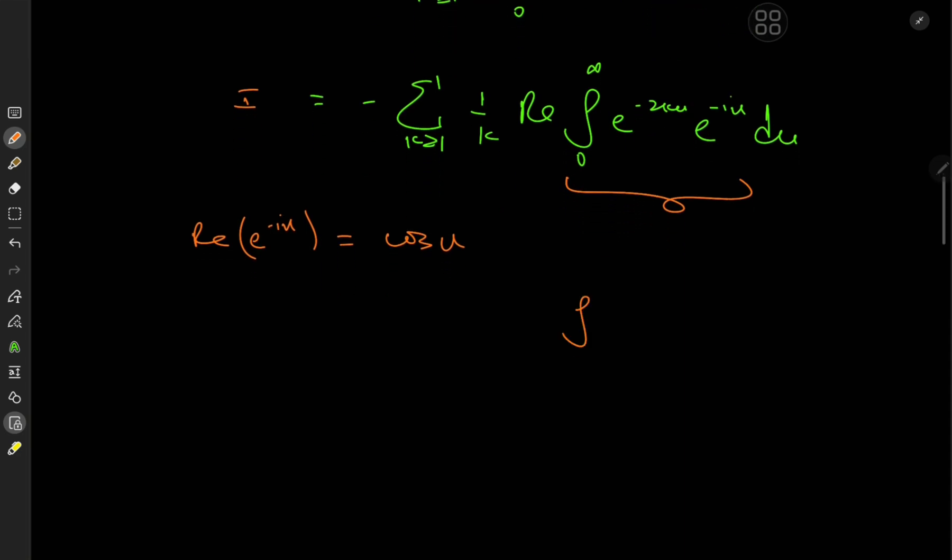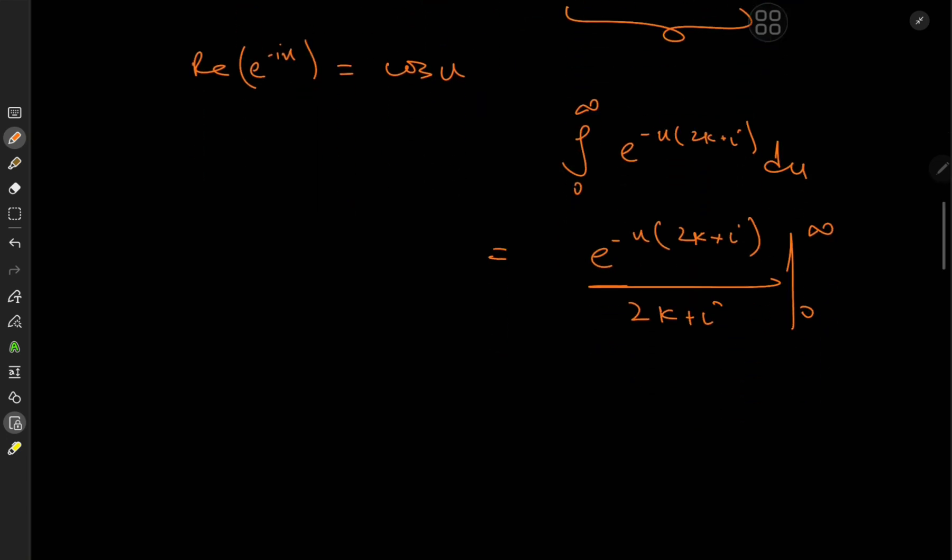This can be evaluated as the integral from 0 to infinity, e to the minus u could be factored out. So we have 2k plus i du, which sorts out to e^(-u(2k+i)) over 2k plus i, limits are 0 and infinity.